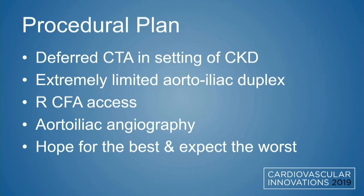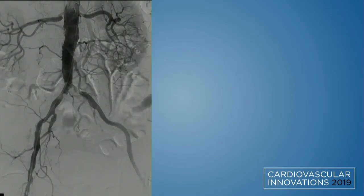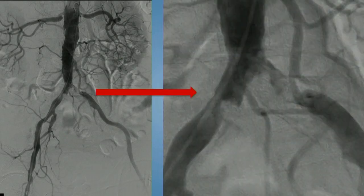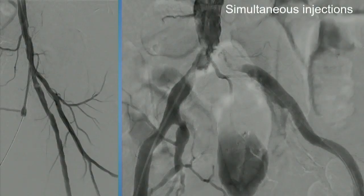We deferred CTA given his creatinine, though we'll sometimes use CTA when we know we're going to war with complex iliac disease. We did do an aortoiliac duplex, but it was somewhat limited secondary to bowel gas. The plan was: right CFA access, take pictures, hope for the best, always expect the worst. Our first picture shows disease in the right common iliac, and on the left, what initially looks like a small track turns out to be a collateral — in reality a left common iliac CTO with a short cuff of normal vessel. We did simultaneous bilateral injections, similar to coronary CTO technique, revealing a fairly blunt beak and a highly calcified chronic occlusion.